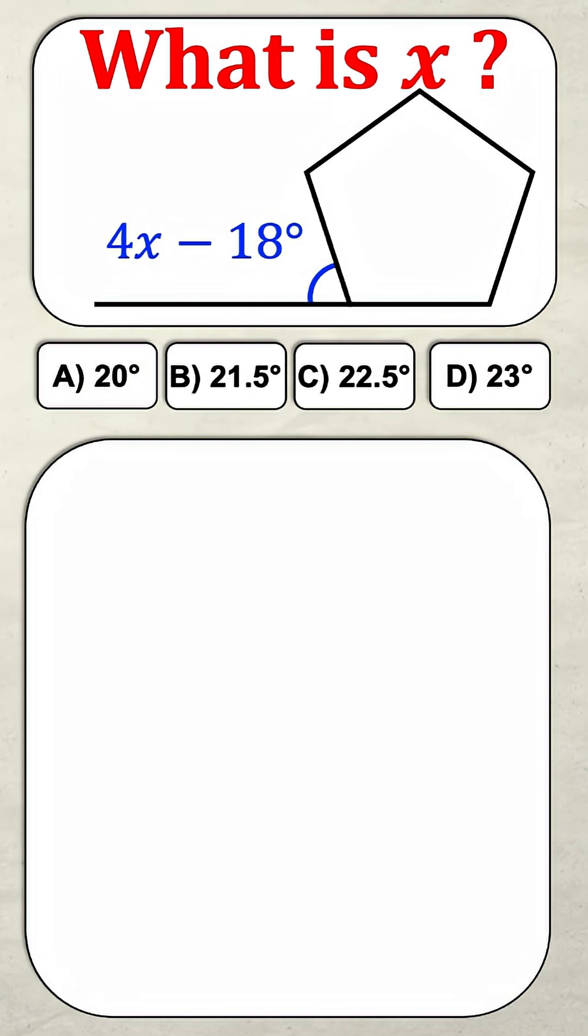The first thing we notice is we're looking at a pentagon. It has five sides and five angles, and we want to know how much each of these orange angles are. So the first thing we need to do is find the sum of all the angles inside this pentagon.